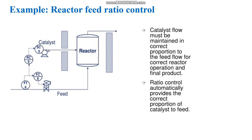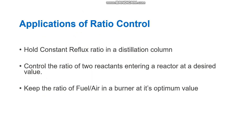One example of ratio control is reactor feed ratio control. A reactor with catalyst and feed is shown here. The catalyst flow is maintained in the correct proportion to the feed flow for correct reactor operation and to get the final product. Ratio control automatically provides the correct proportion of catalyst to feed by maintaining the ratio of the two streams.